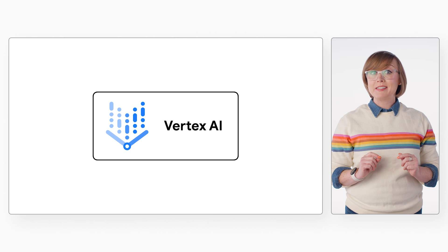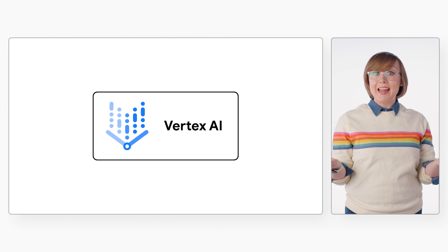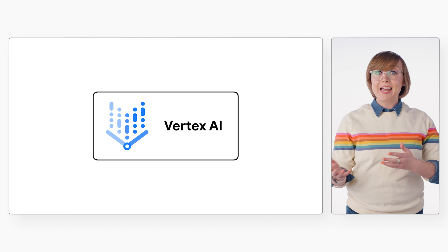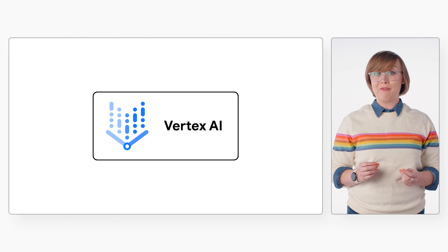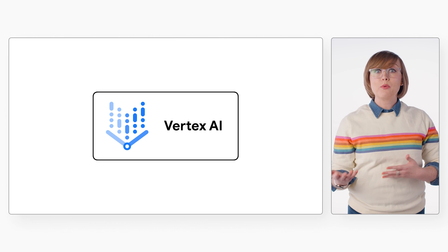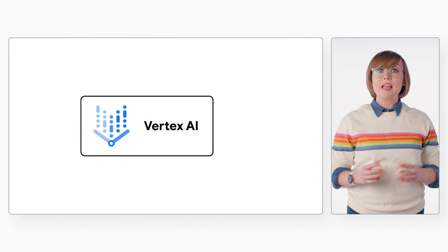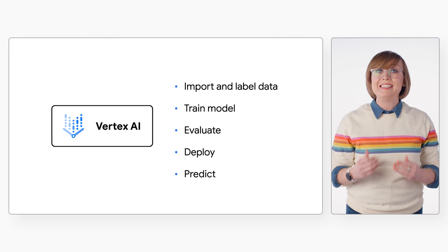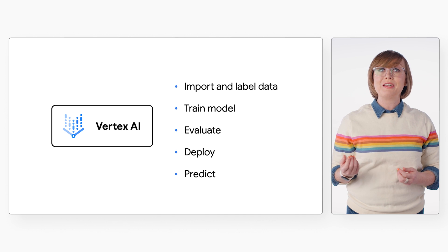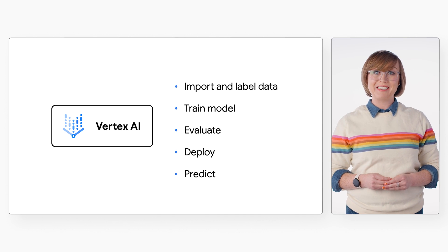To better understand Vertex Explainable AI, let's quickly cover what Vertex AI is and how it works. Vertex AI is Google Cloud's end-to-end machine learning platform that helps engineers and data scientists accelerate machine learning experimentation and deployment. It brings together Google Cloud's existing ML offerings into a single environment for efficiently building and managing the lifecycle of ML projects.